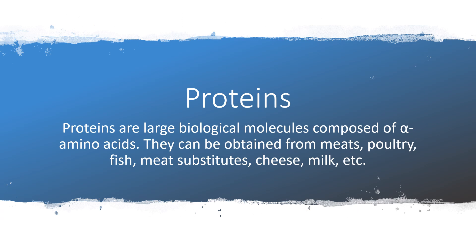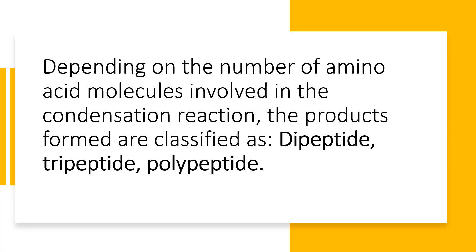Proteins are large biological molecules composed of alpha amino acids. They can be obtained from meats, poultry, fish, meat substitutes, cheese, milk, etc. Depending on the number of amino acid molecules involved in the condensation reaction, the products formed are classified as dipeptide, tripeptide, or polypeptide. A dipeptide is the product formed by the condensation of two alpha amino acid molecules.